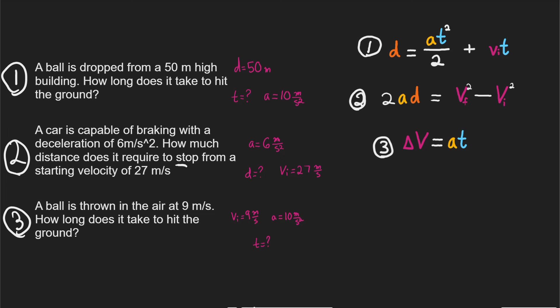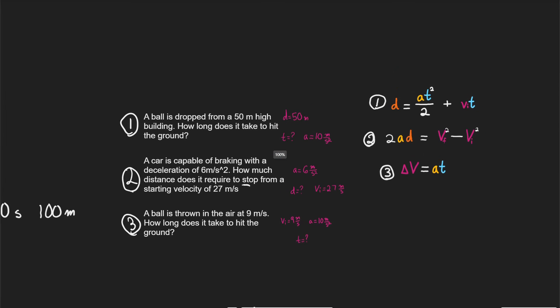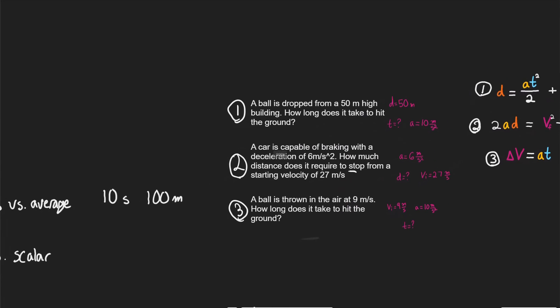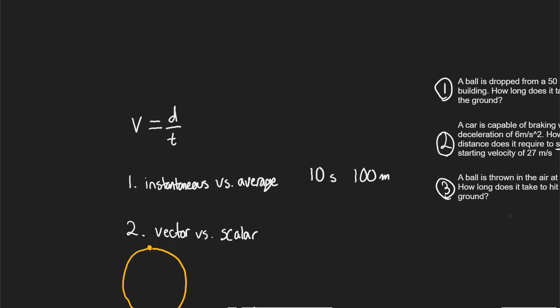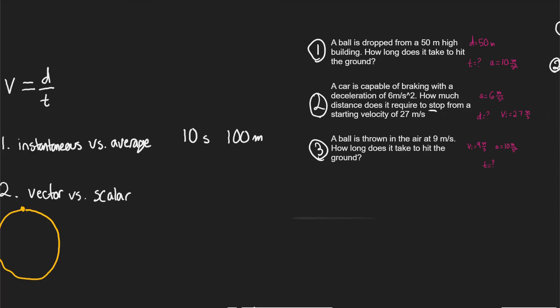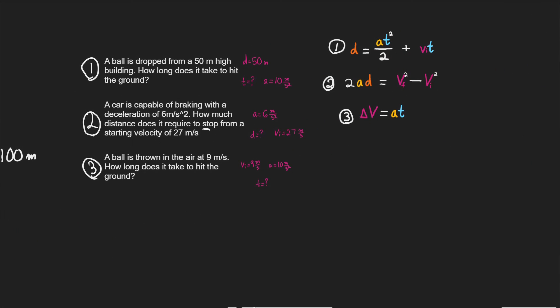The hard part is matching the story problems with the equations. To summarize: we talked about velocity equals distance over time, and then these three kinematic equations. That's all we're going to cover for velocity and acceleration for the MCAT.